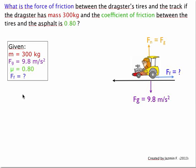First we have our given. The mass equals 300 kg. Force of gravity 9.8 m per second squared. Coefficient of friction is 0.80. And the force of friction is what we're looking for.